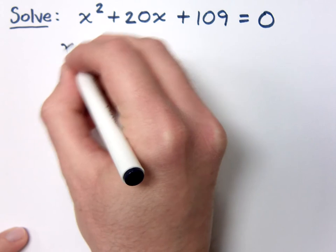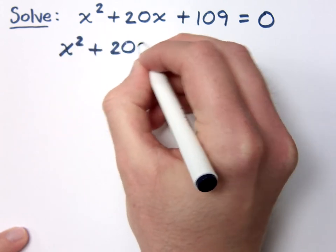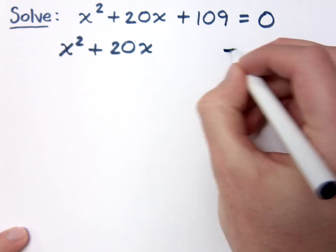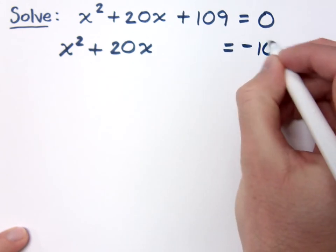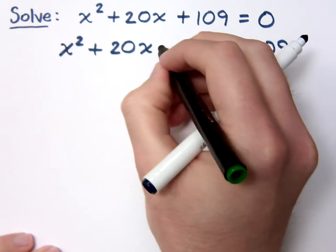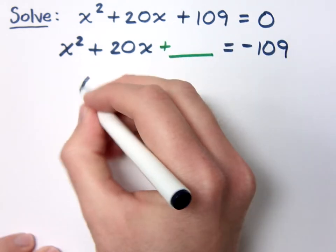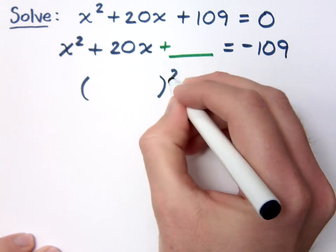Now before I can do that though we have to move the 109 to the other side. So x squared plus 20x equals negative 109. Now remember what we're trying to do is that we're trying to find a number to put here so that whenever I factor I get a square.